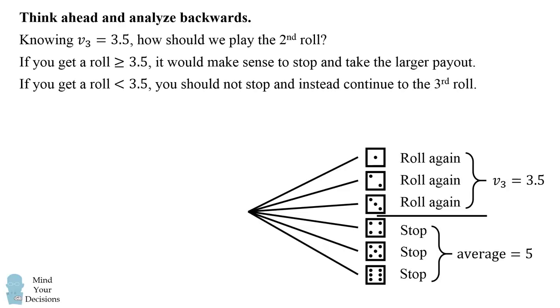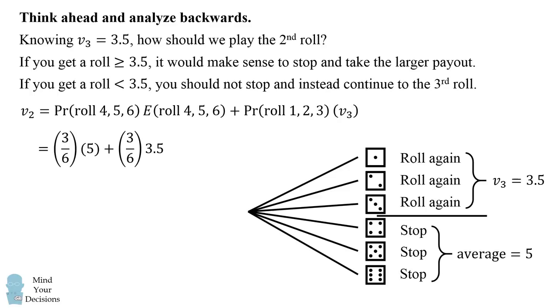So now we can figure out the value of the second roll based on these possibilities. We'll either get a 4, 5, and 6, and we'll stop and get our average payout from there. Or we'll get a 1, 2, or 3, and we'll roll again and get the average payout of the third roll. So half the time, or 3/6 of the time, we'll get an average payout of 5 because we've stopped.